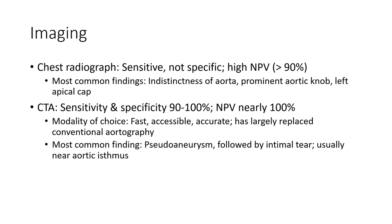Imaging. Chest radiographs are sensitive but non-specific, with a negative predictive value of more than 90%. The most common finding is indistinctness of the aorta and mediastinal widening, and widening of the aortic knob.